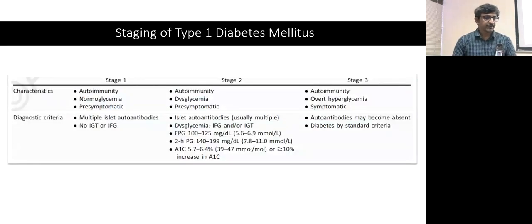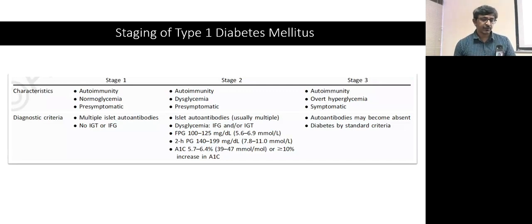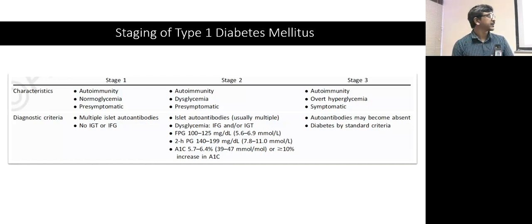Type 1 diabetes can be staged as stage 1, stage 2, and stage 3. In stage 1, antibodies are positive but sugars are completely normal — no impaired glucose tolerance or impaired fasting glucose. The characteristics are autoimmunity, normal glycemia, and pre-symptomatic. Stage 2 is when antibodies are present with associated dysglycemia — either impaired fasting glucose or impaired glucose tolerance — and they remain pre-symptomatic.